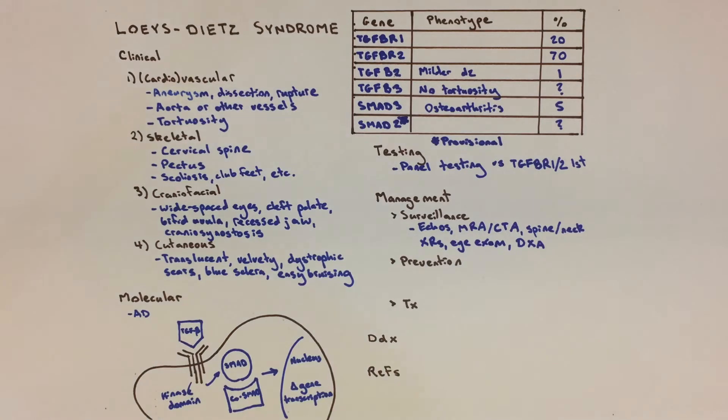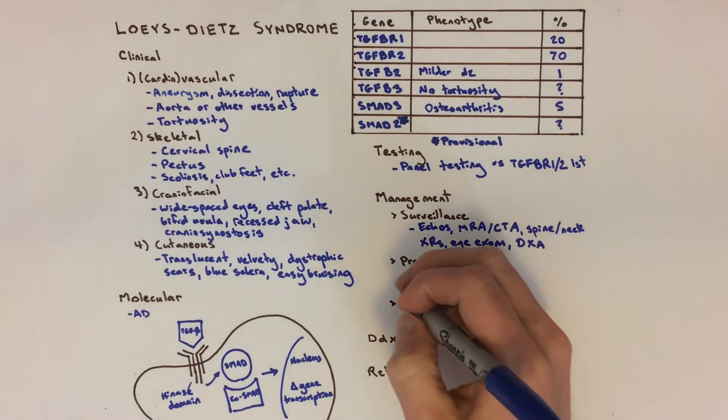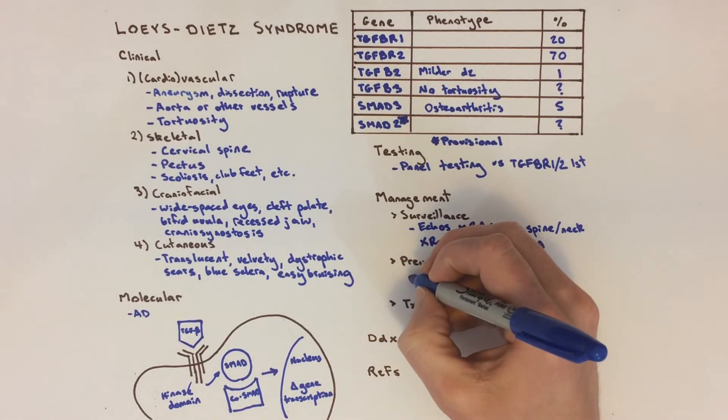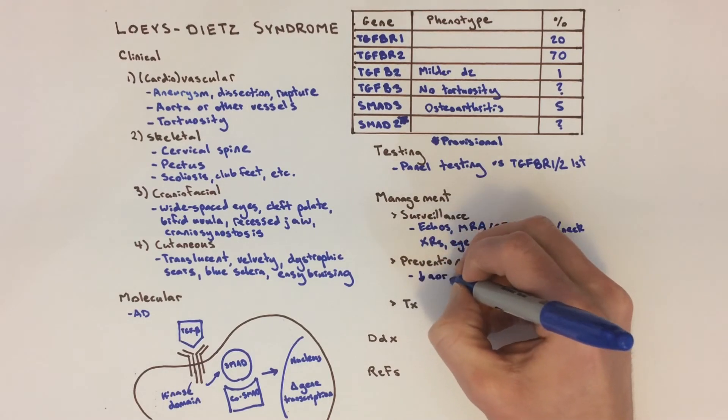Complications of Loeys-Dietz syndrome can be actively prevented in a number of ways. Aortic wall stress can be lowered using beta blockers, and avoided by staying away from high exertion and isometric exercises, and by not using cardio-stimulating medicines.